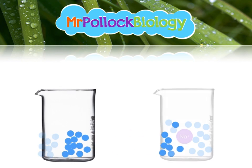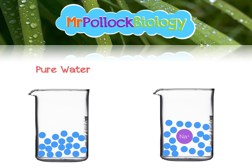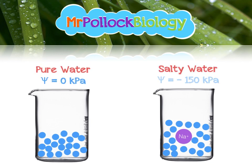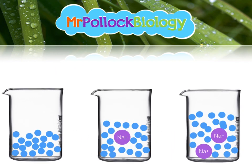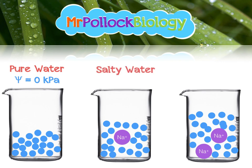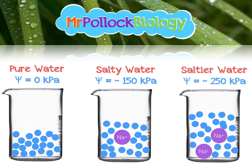The more solute we add — in this case we've got some sodium — the more negative the water potential becomes. I've just assigned some arbitrary values to these. The pure water will always have a water potential of zero kilopascals. The more solute we add, the more negative the water potential becomes. The reason behind this is that the solute acts like there's less free water, because sodium or any ion or solute will stick water molecules nearby to it and prevent them from moving as freely.